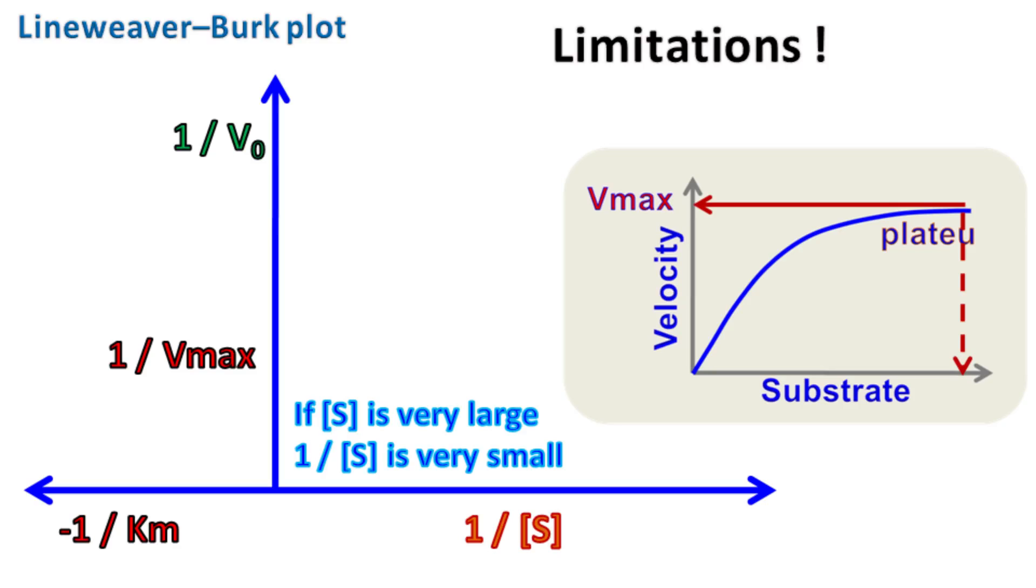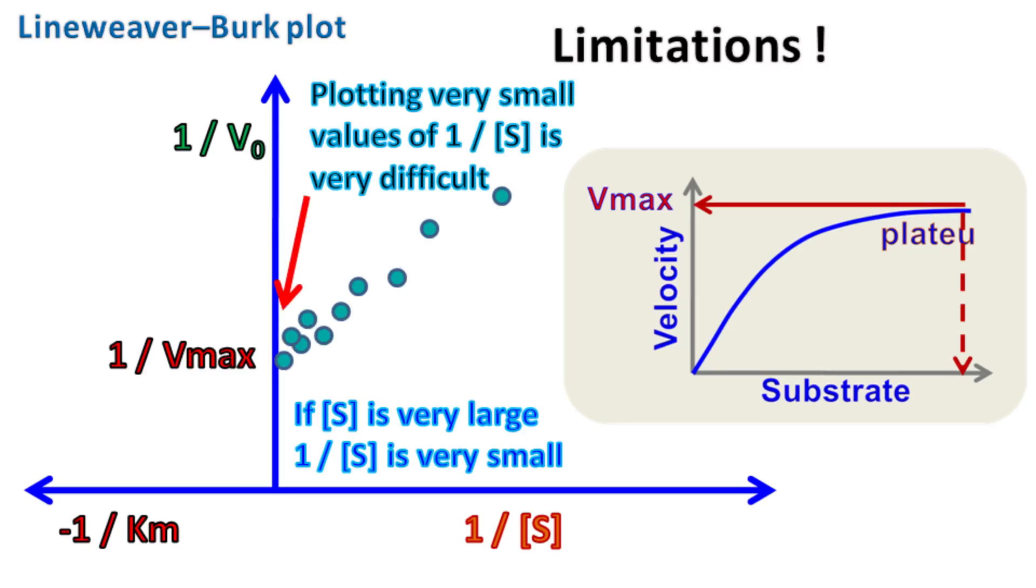Also, because of inverse values, the points tend to cluster in one region of the graph. And any error in plotting the graph can give rise to error in the measurement of Vmax and Km.